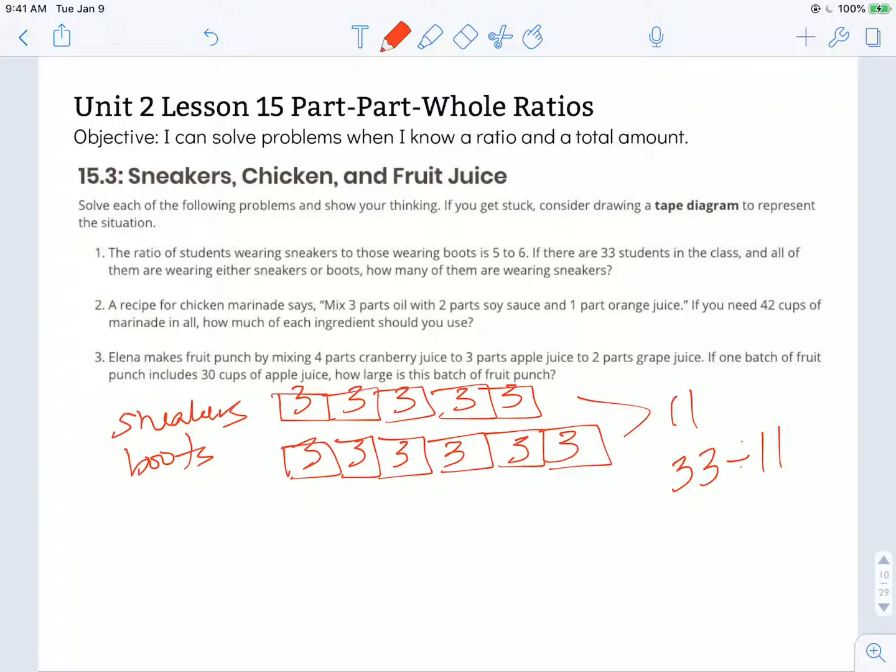So again, to double-check to make sure that's right, I have 3, 6, 9, 12, 15, 18, 21, 24, 27, 30, 33. So for the number of students in sneakers, I have 5 groups of 3, which is 15. So 15 in sneakers, and 18 in boots.